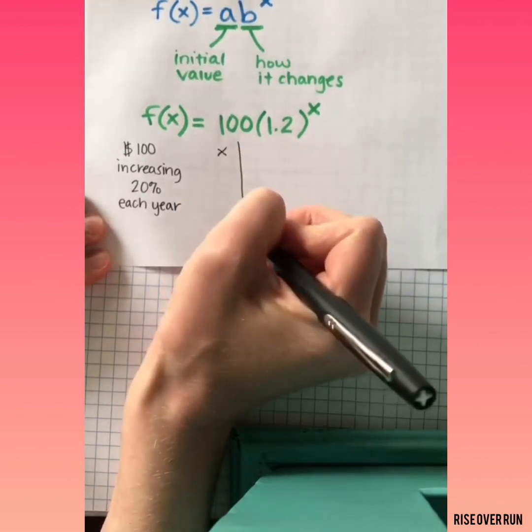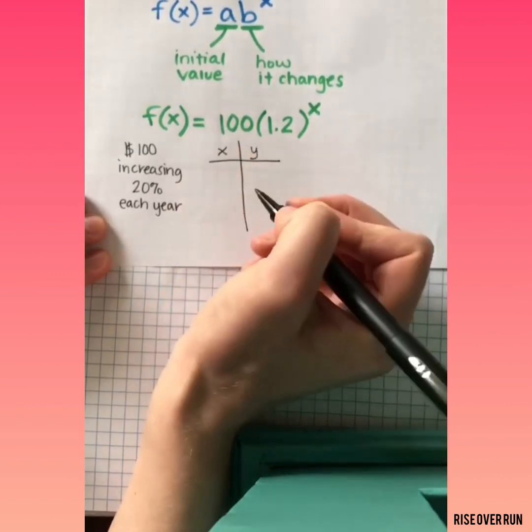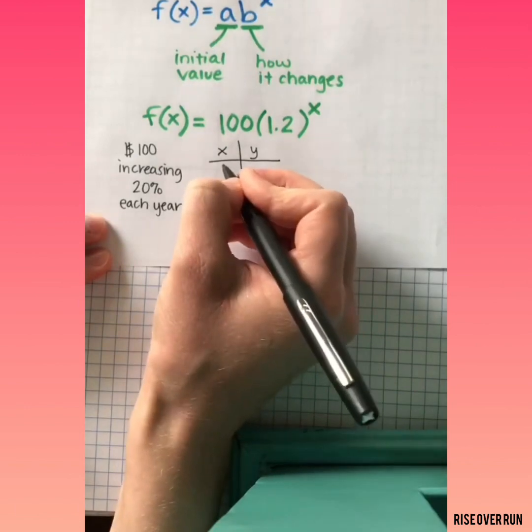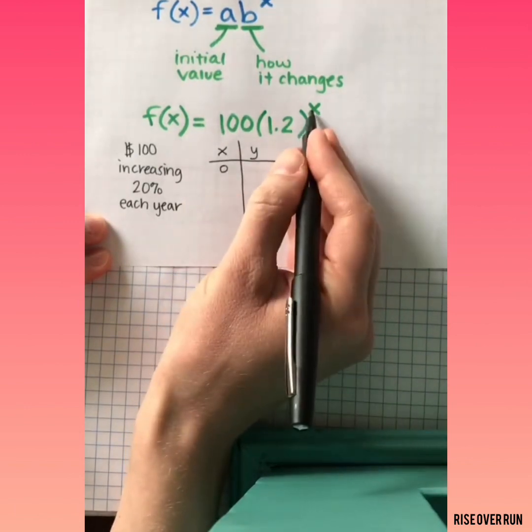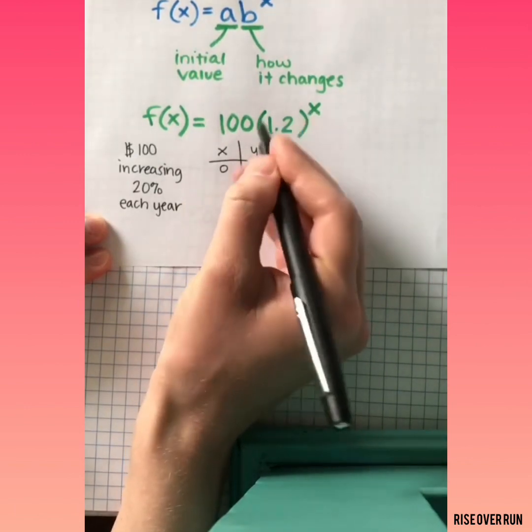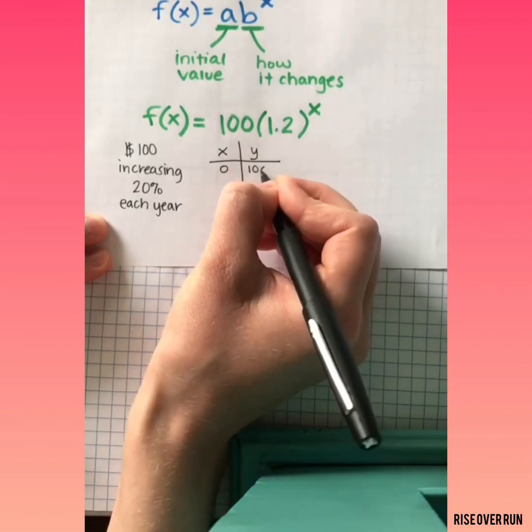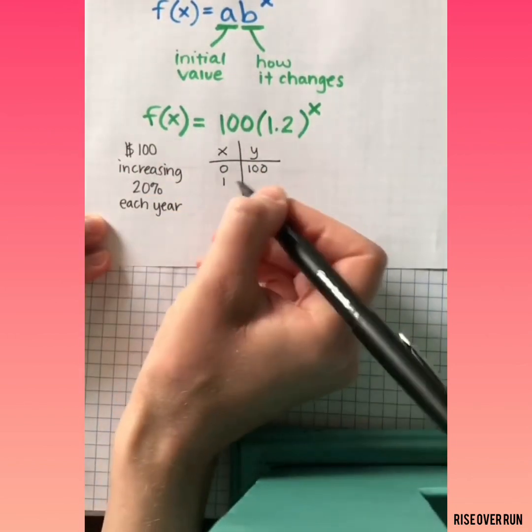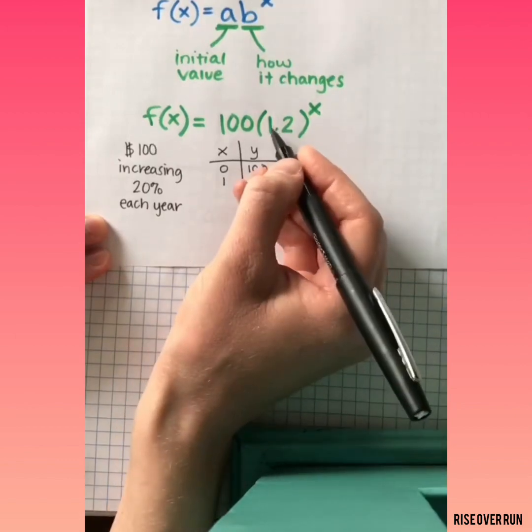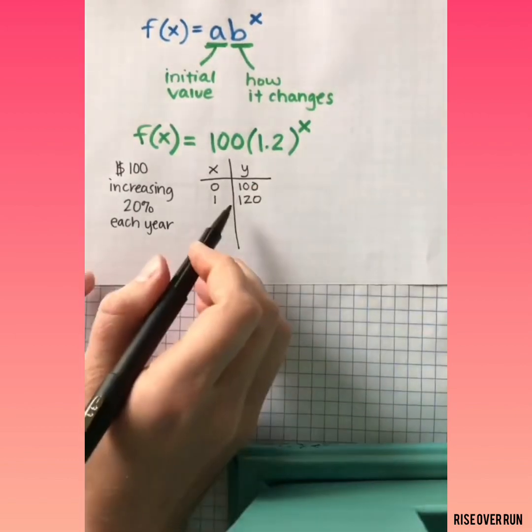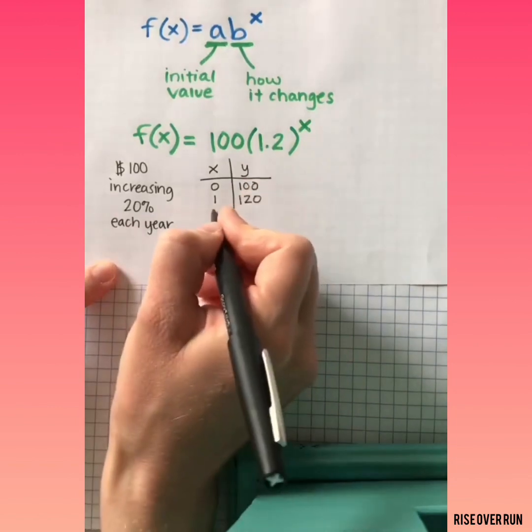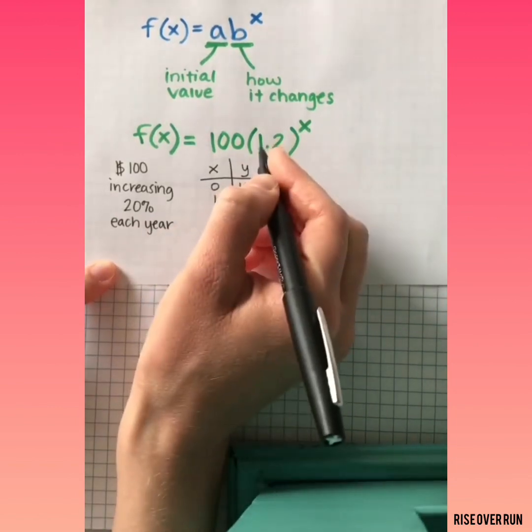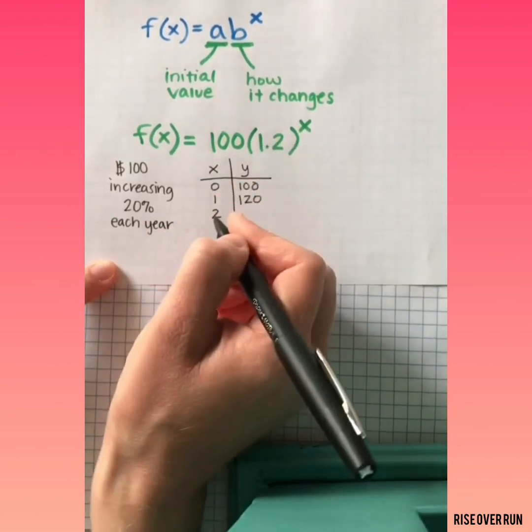So let's make a table to see how this money would grow. Starting out, if we plug a zero in here, this would just become 1, which would show our starting value of 100. The first year, we would multiply by 1.2 to show a new value of 120. The second year, we'd have 1.2 raised to the second power,